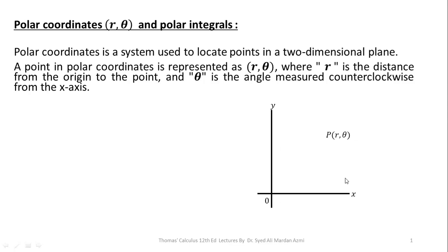Here in this diagram, if P is a point in two-dimensional space, then this straight-line distance is the distance of the point from the origin and it is the value of R. And if you measure the angle of this point in the counterclockwise direction with the positive x-axis, then it will provide us the value of theta.